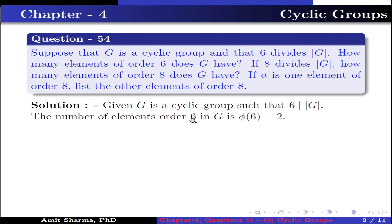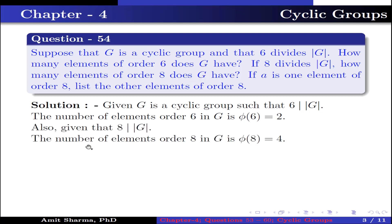The number of elements of order 6 in G is φ(6), which is equal to 2. This is because if G is a cyclic group and a positive number D divides the order of G, then the number of elements of order D in G is φ(D). Also, given that 8 divides the order of G, the number of elements of order 8 in G is φ(8), which is equal to 4.